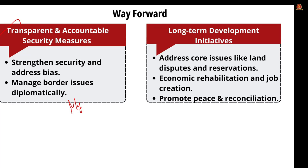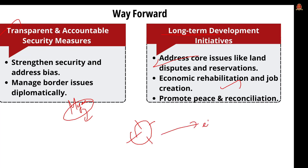Further solutions include strengthening security by addressing bias and conducting fair security measures to restore public trust. A diplomatic framework with Myanmar can manage border issues without disrupting cross-border movement. Long-term development initiatives should address core issues like land disputes, reservation, and access to resources through impartial committees and transparent policies. Rehabilitation schemes focusing on job creation, education, and skill development can boost the local economy. Finally, the government should initiate trust-building measures and intercommunity dialogue to achieve reconciliation and resolve the ethnic conflict.